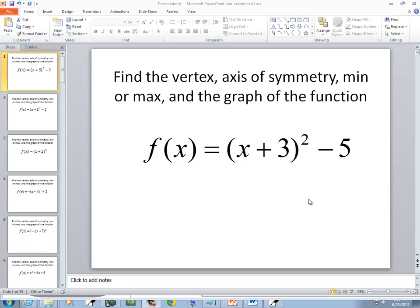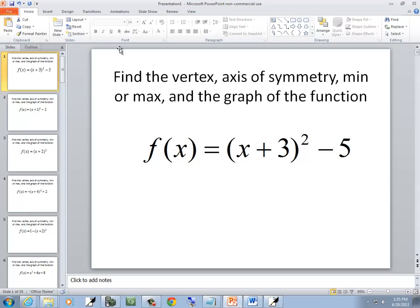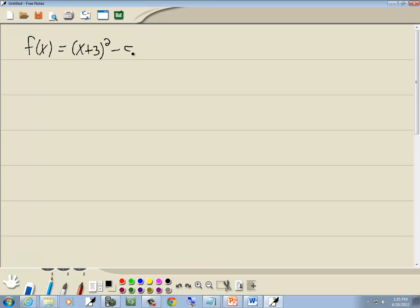In this problem, we want to find a vertex, axis of symmetry, min or max, and a graph of the function. So we've got f of x is equal to x plus 3 squared minus 5. Now this is in standard form.